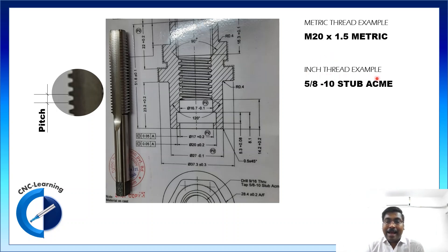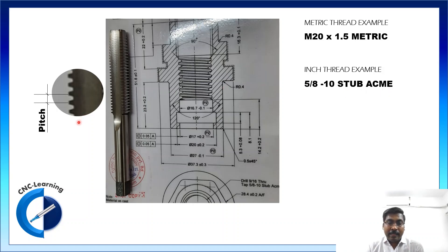In the same way, if you look at an inch thread: 5/8-10 STUB ACME. 5/8 is the size of the thread. 10 is called TPI — threads per inch. And STUB ACME is the type of thread. As you can see in the picture, an ACME thread has a trapezoidal shape.